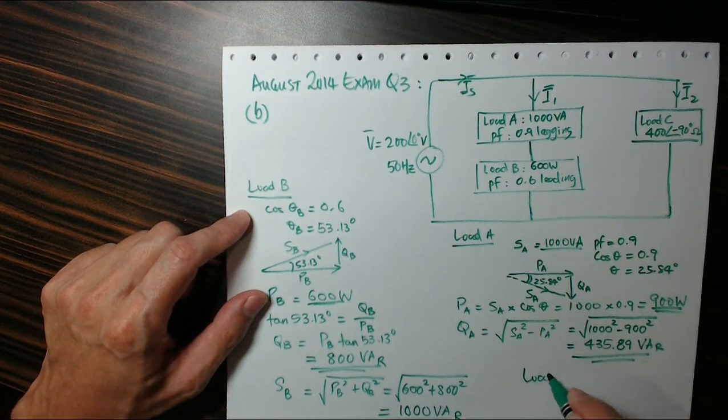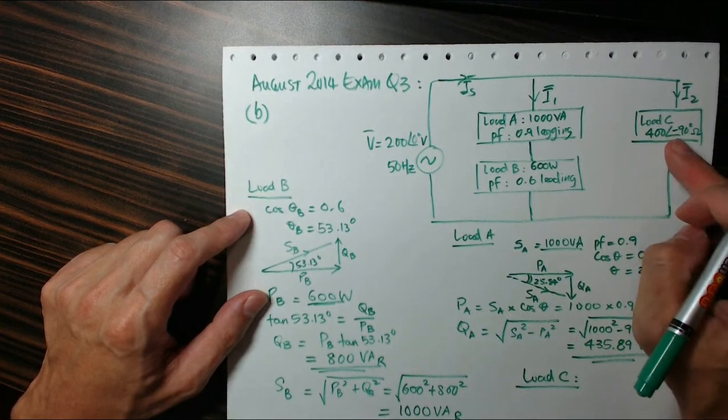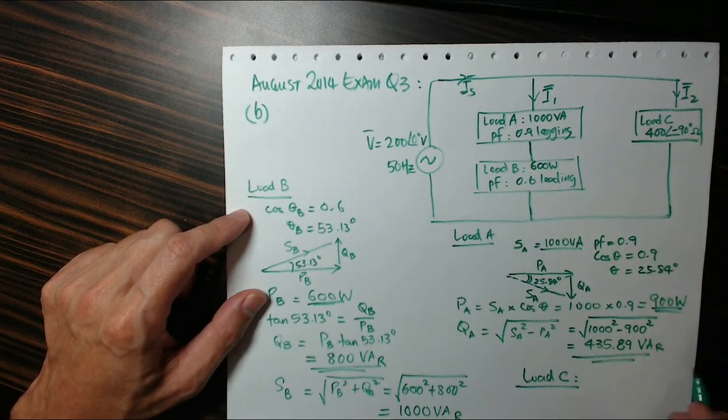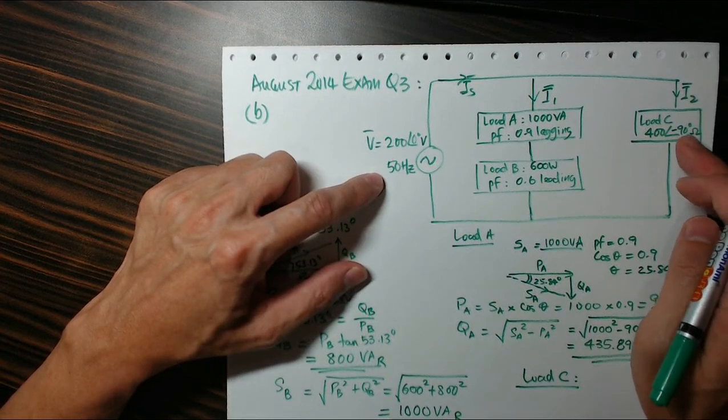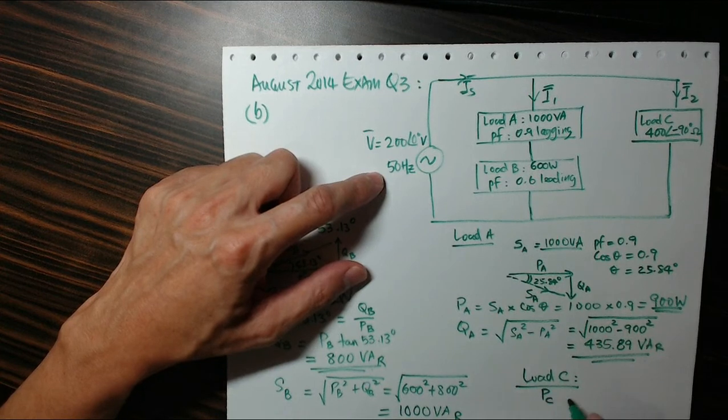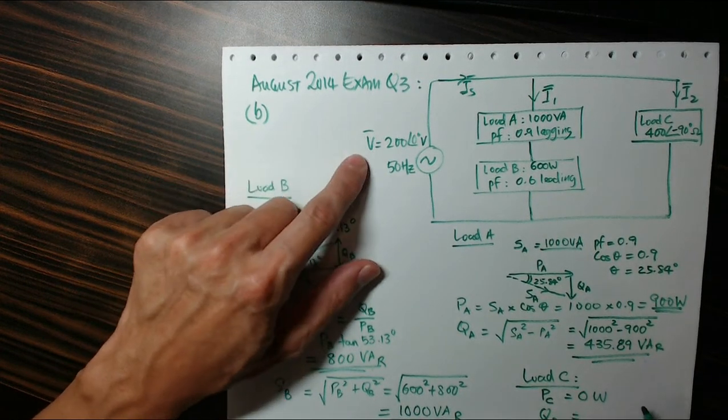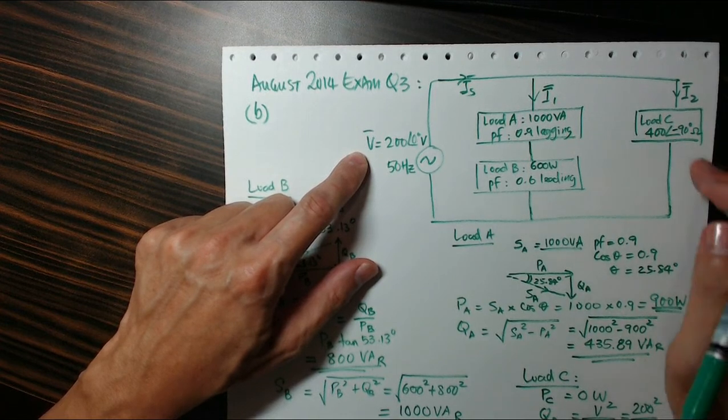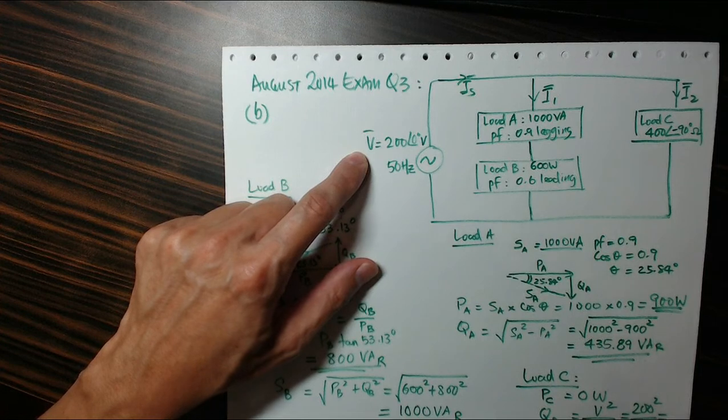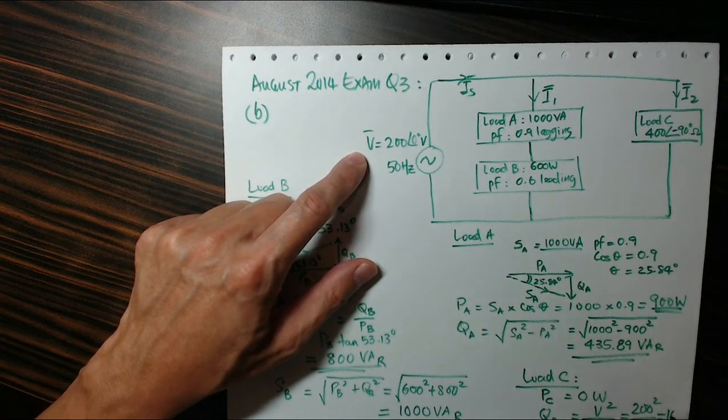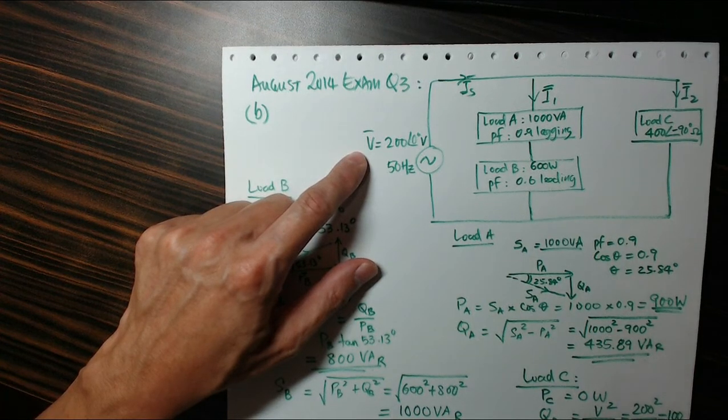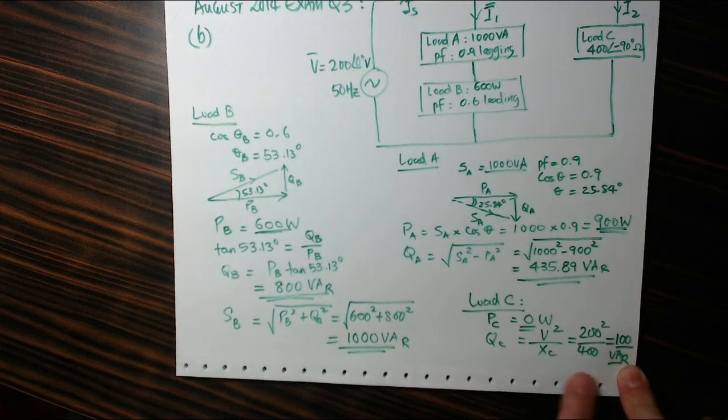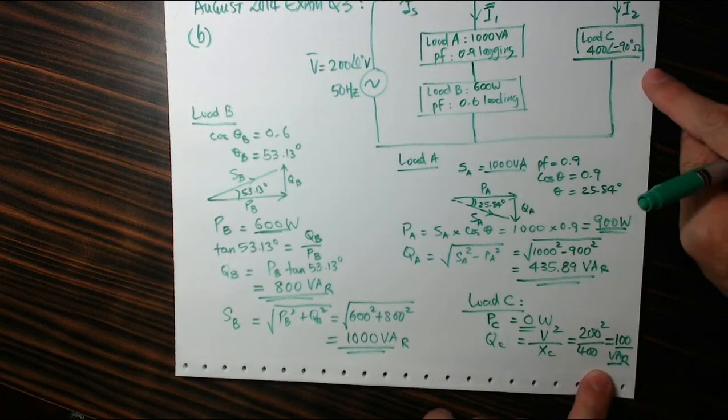And finally for load C, what do I do with load C? Now load C is slightly different because what I see here, load C is 400 at the angle of minus 90 degrees ohms. Right, so if I want to calculate, in other words it has no real power, so PC is zero. But QC can be calculated from V squared upon XC, so that's 200 squared upon 400, so that gives me 100 VAR.